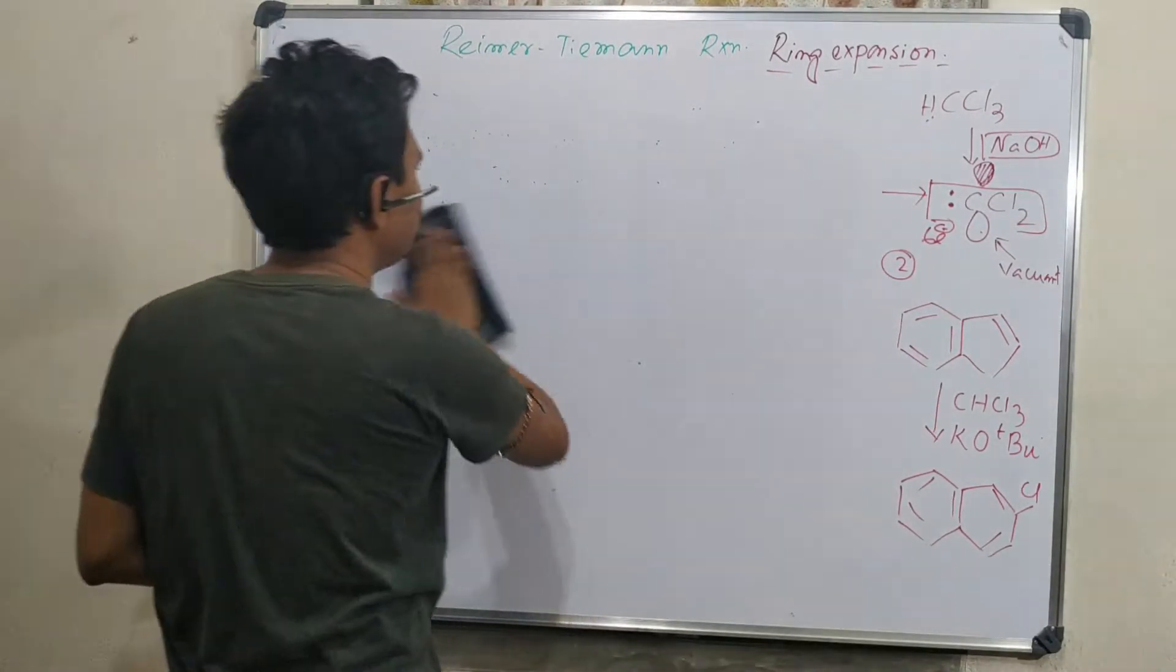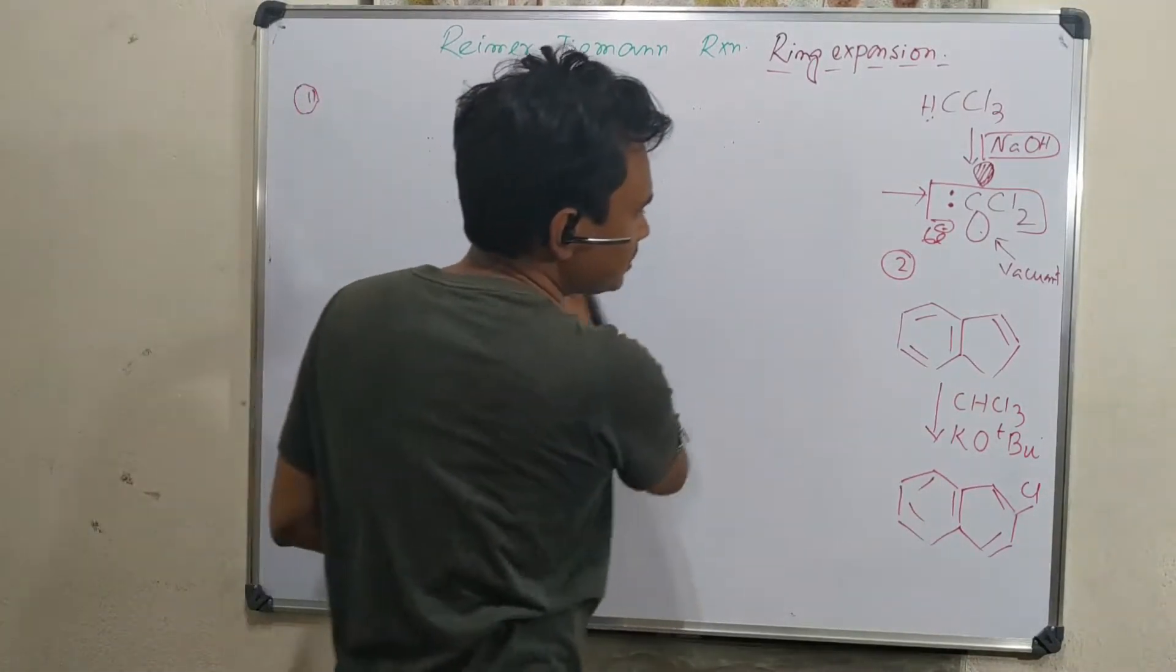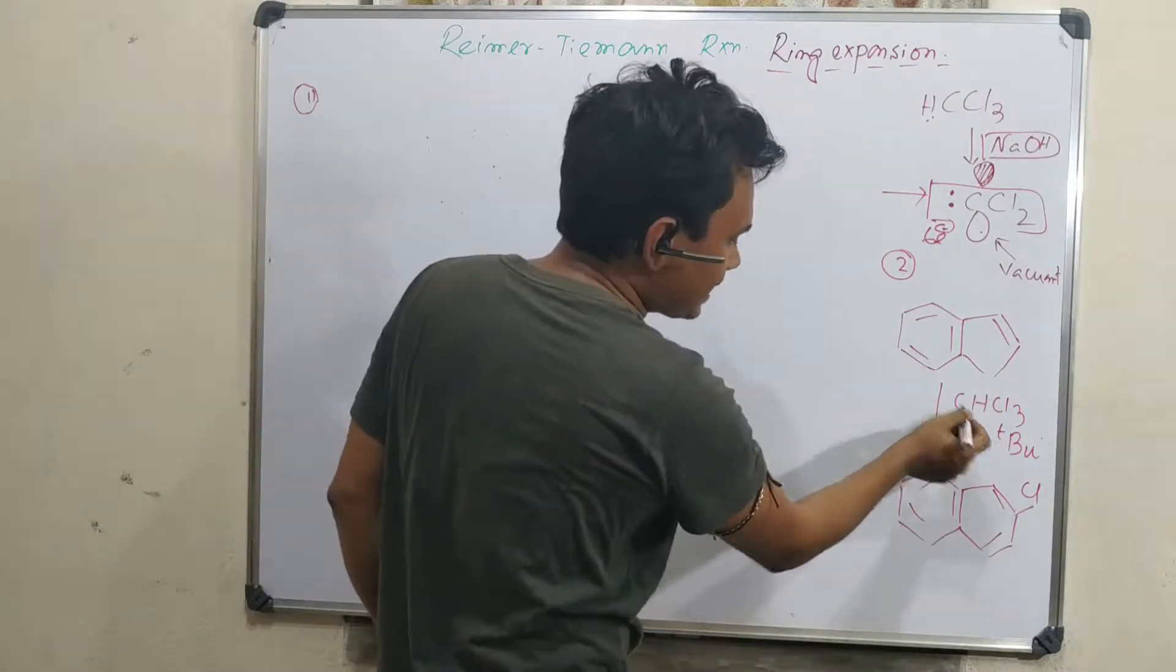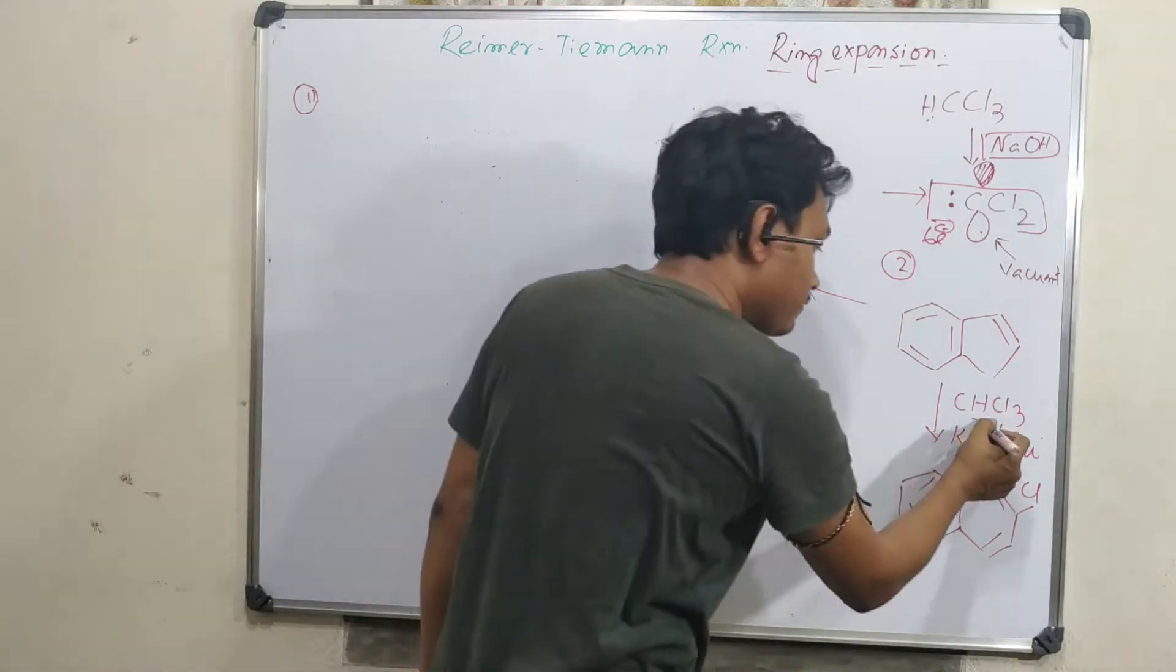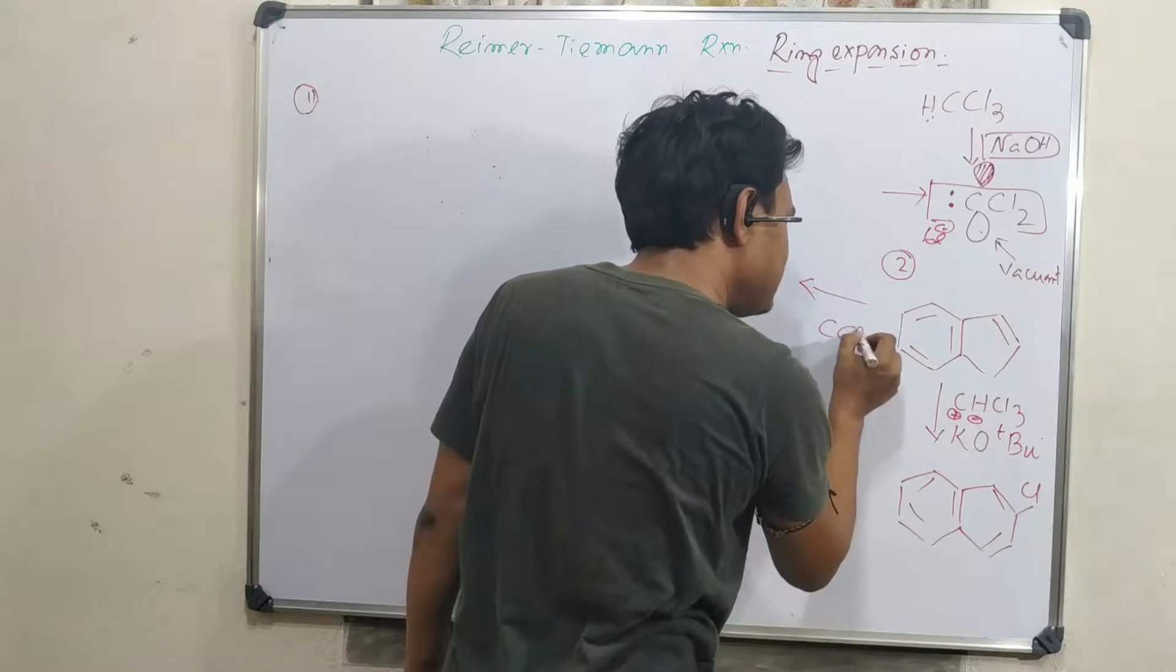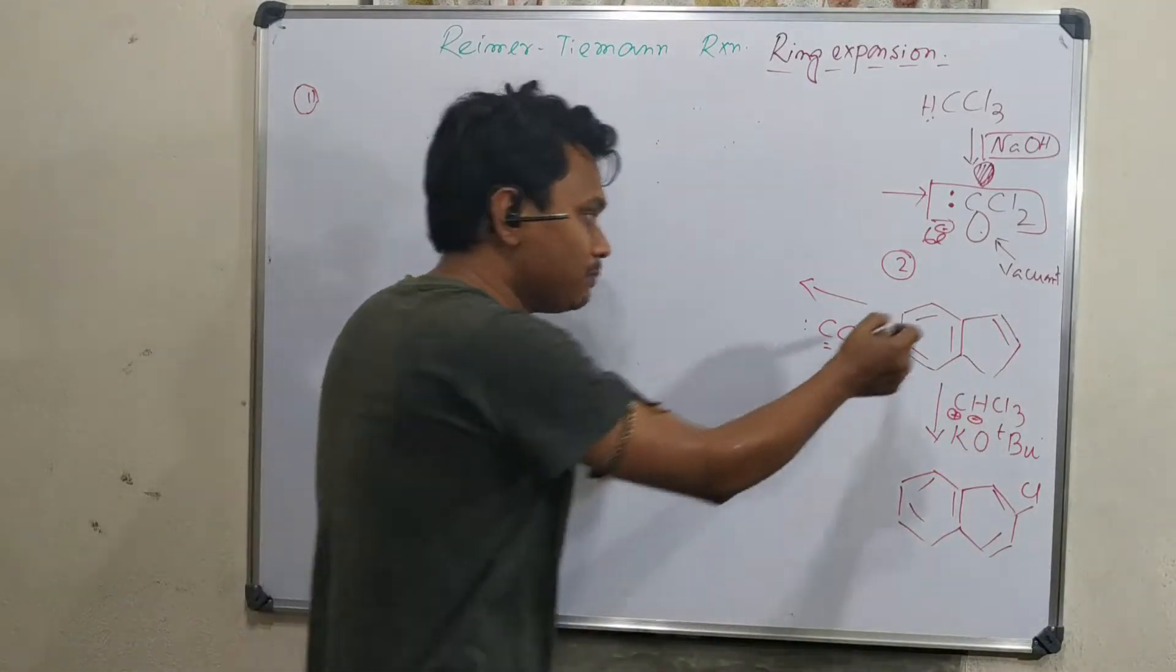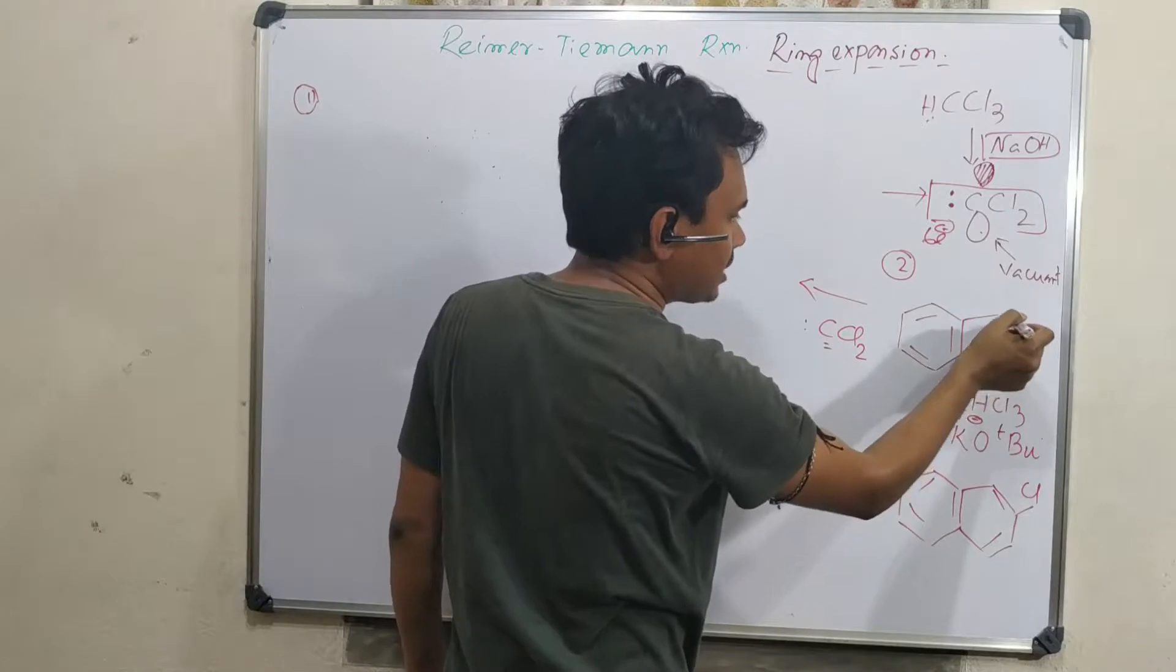Now we will discuss another example where ring expansion also occurs. For example, reaction with this aromatic moiety attached to five-member ring with a double bond. In presence of tertiary butoxide, a very strong base, it will still produce dichlorocarbene in similar fashion. I told in the beginning that dichlorocarbene can attach to the double bond. This double bond is also activated because of conjugation.